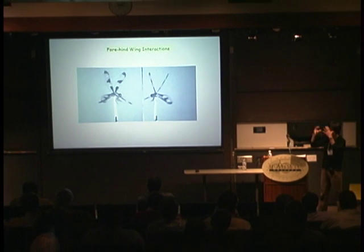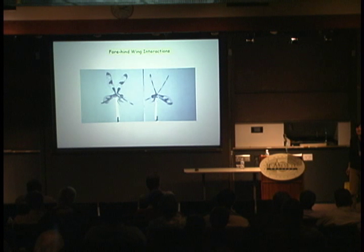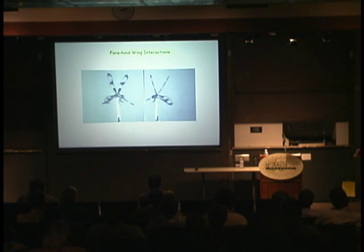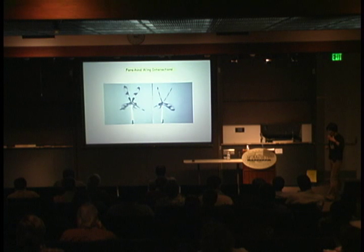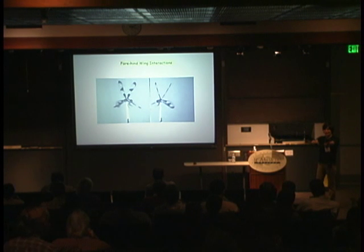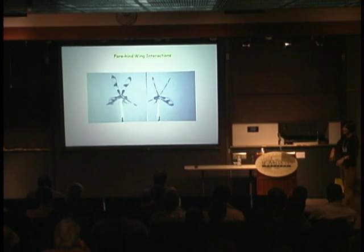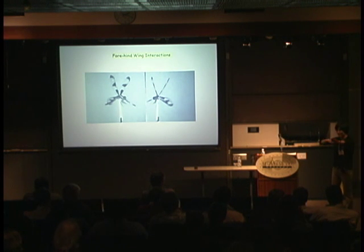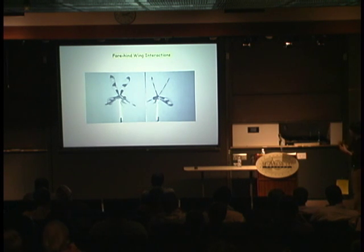That's one investigation: look at a simple wing, simplify as much as possible, and see what we've learned. The next thing I want to look at, especially interesting for dragonfly flight, is that they have two pairs of wings. Do they interact, and what kind of interaction? The same interaction question applies to birds moving in formation, or a school of swimming fish.